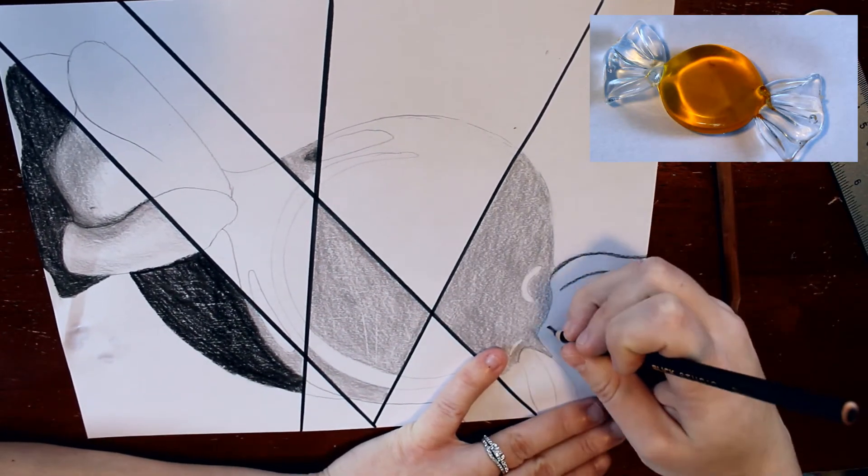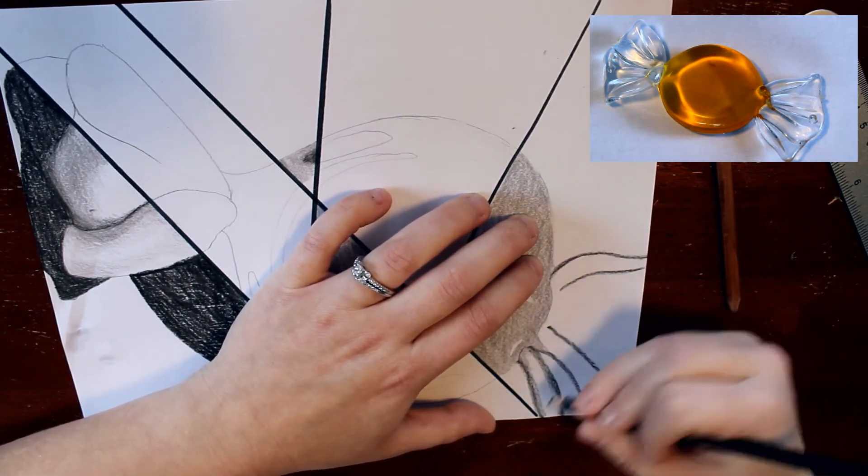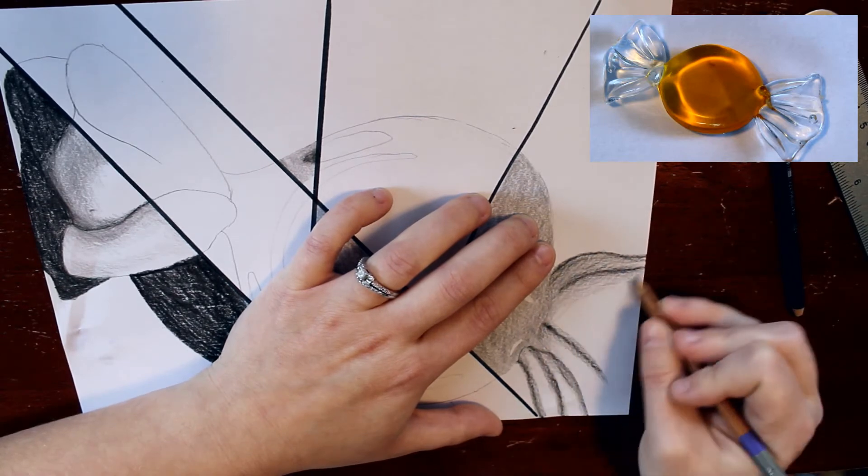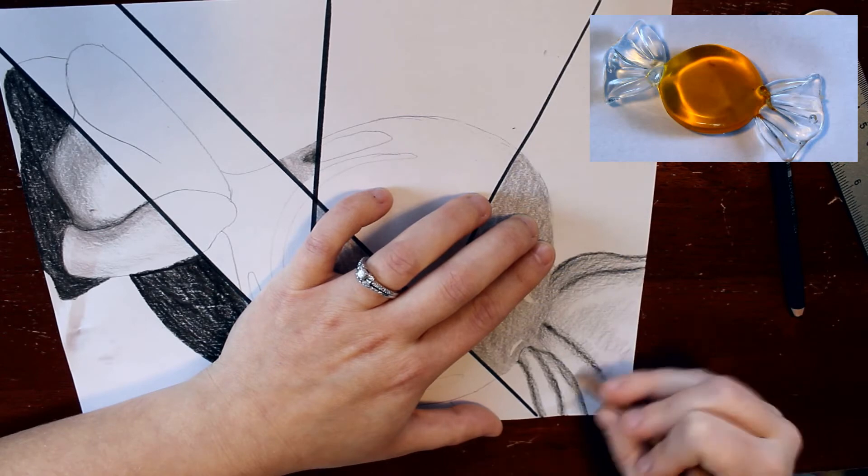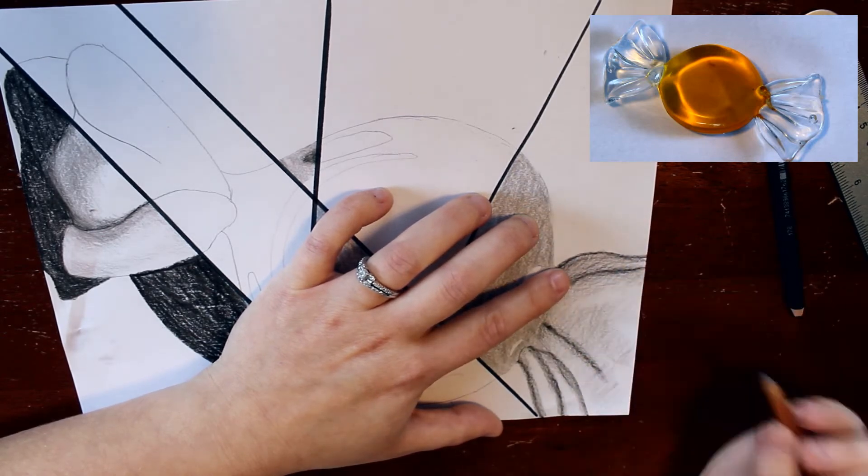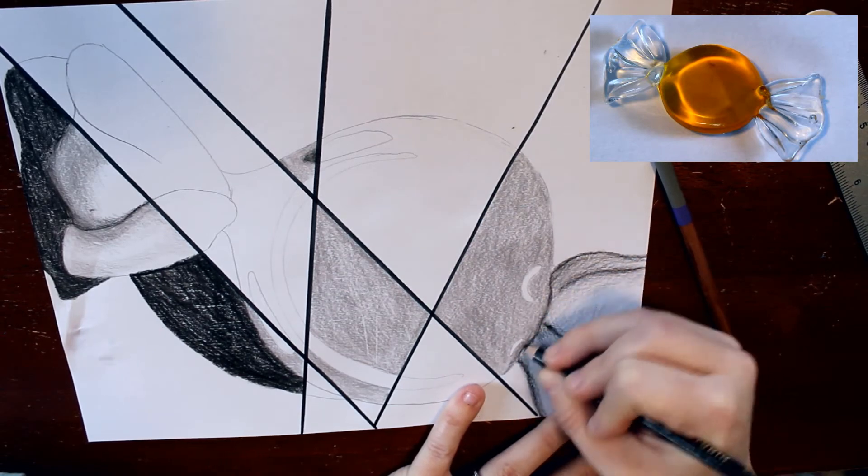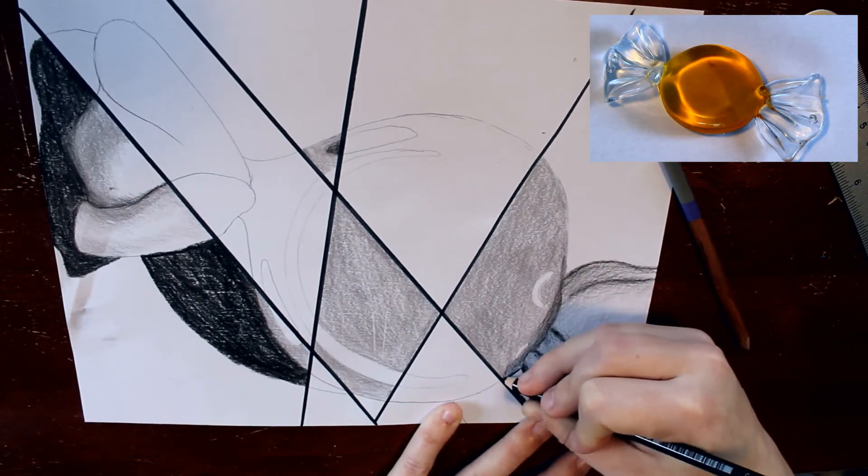In our shadows we're going to have the darkest color, the darkest black you can get. If you want to use a marker for this part, you can do that too. Here we're showing contrast with black and white. The darkest color black is going to really contrast against the white areas, making the black and the white really pop.